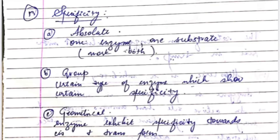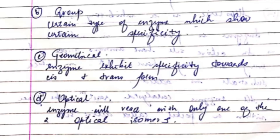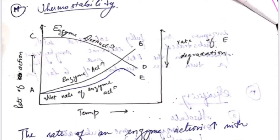Another property is specificity. Absolute specificity means one enzyme, one substrate. Group specificity means certain types of enzymes show specificity for certain groups. Geometrical specificity means enzymes exhibit specificity towards cis and trans isomers. Optical specificity means enzymes react with only one of the two optical isomers.